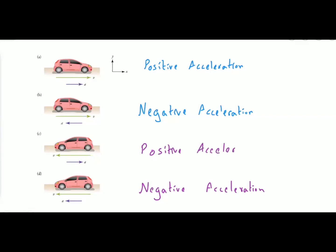These are the four examples by which you can easily understand positive and negative acceleration: speeding up towards positive x-axis; slowing down towards positive x-axis; slowing down towards negative x-axis; and speeding up towards negative x-axis.